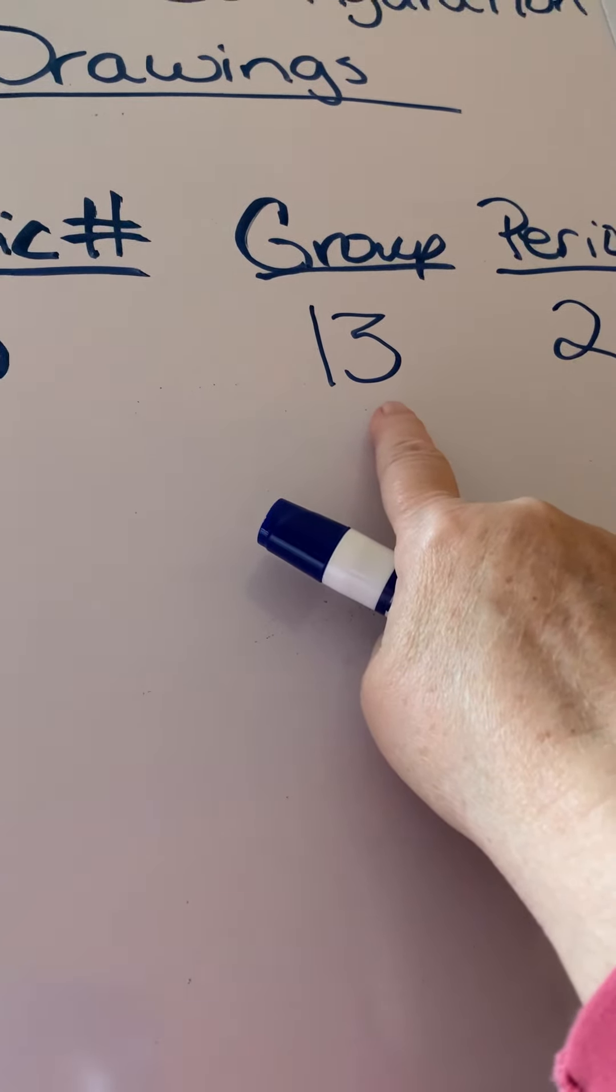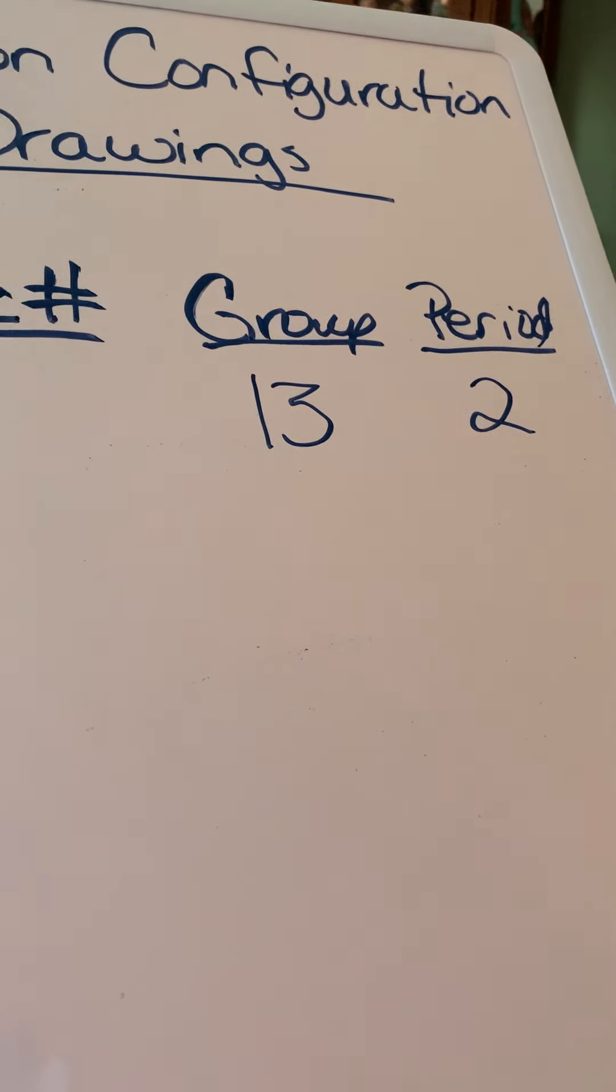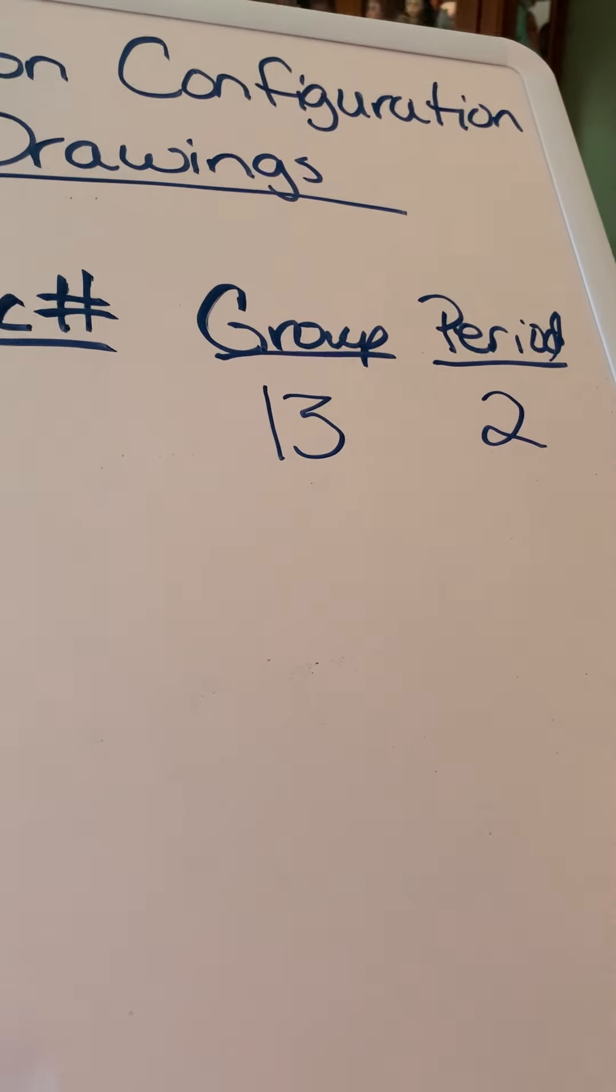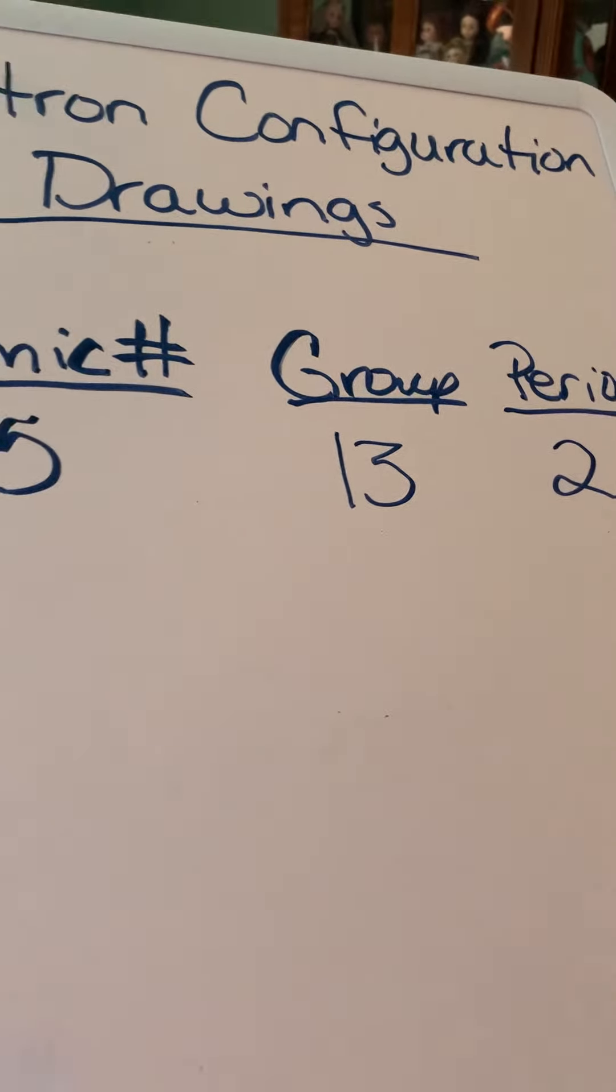What does the period number tell you? Waiting, wait for it, wait for it. Yes, great. It tells you how many orbitals or shells there are total in the electron cloud for boron.